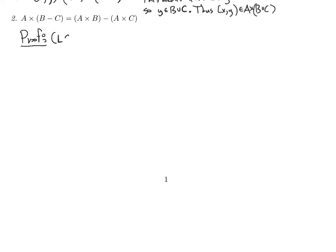Try the first direction — L is a subset of R. I'm calling this bit L and this bit R just for ease of notation. Try and see if you can get this argument down. One thing to point out: there's no way we can use a without-loss-of-generality argument here, because B and C are not symmetric. B minus C is not the same thing as C minus B — they're different. So there's no way to use a symmetric without-loss-of-generality argument.